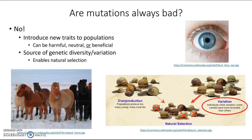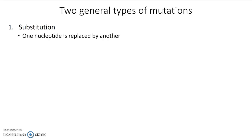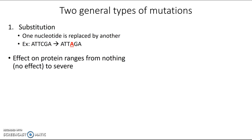Now let's take a closer look at specific types of mutations. There are two general types you need to know. The first is substitution, which is exactly what it sounds like — this is what happens when one nucleotide gets replaced by another in a DNA sequence. For example, the sequence ATTCGA might have one letter swapped out to become ATTAGA. In terms of the effect on the protein that DNA codes for, it has a wide range: it could have no effect, or it could have a really severe effect, depending on what the exact change is, which letter is changing, and where in the DNA sequence it's occurring.